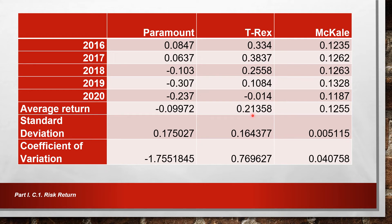How do we evaluate a situation where one stock has higher return while the other has lower risk? Generally, investors want high returns but low risk. We look at the coefficient of variation, which is the best criterion as it incorporates both risk and return, expressed as risk per unit. The lower the coefficient of variation, the lower the risk — and the lowest here is McCale at 0.0404%.